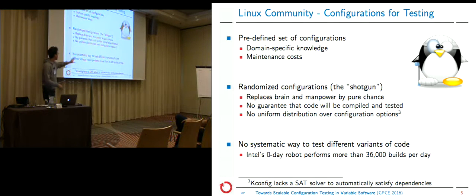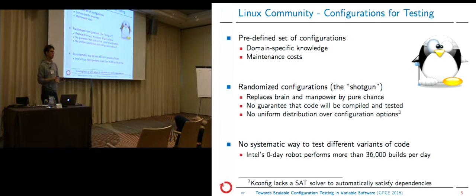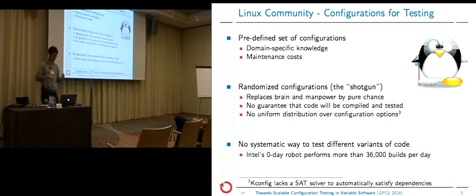Now I'd like to talk about the solutions from the Linux community — how the Linux community tackles the problem of finding configurations for different testing purposes. We mostly detected two approaches. The first is to use a predefined set of configurations. Those can either be hard-coded in the build system — for instance 'all yes', which sets all configuration options to yes, or 'all no', which is the opposite, or using random configs.